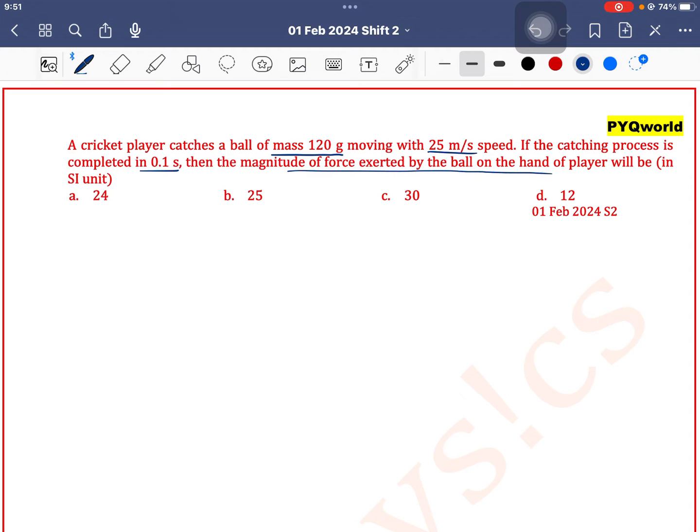Again, easy category question. Mass they have 120 gram, so it will be 120 × 10^-3 kilogram, and speed is 25 meter per second. The process is completed in 0.1 second.